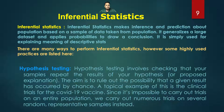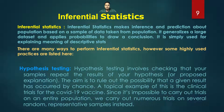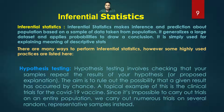Now let's talk about inferential statistics again. So far we've covered descriptive statistics — measure of variability and measure of central tendency. Inferential statistics makes inferences and predictions about population based on a sample of data taken from that population. Classical examples are exit polling predicting which party most people voted for, and drug tests predicting whether a drug will be effective for the population.